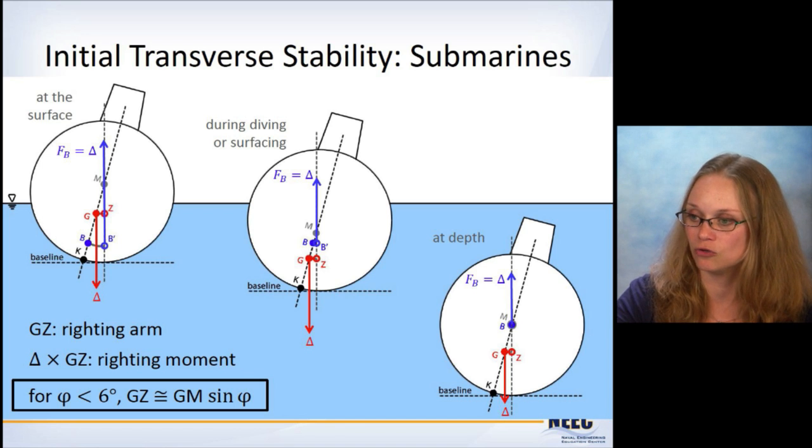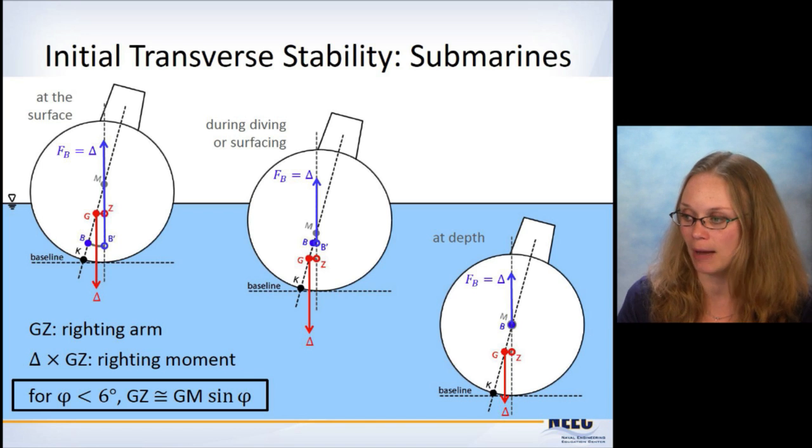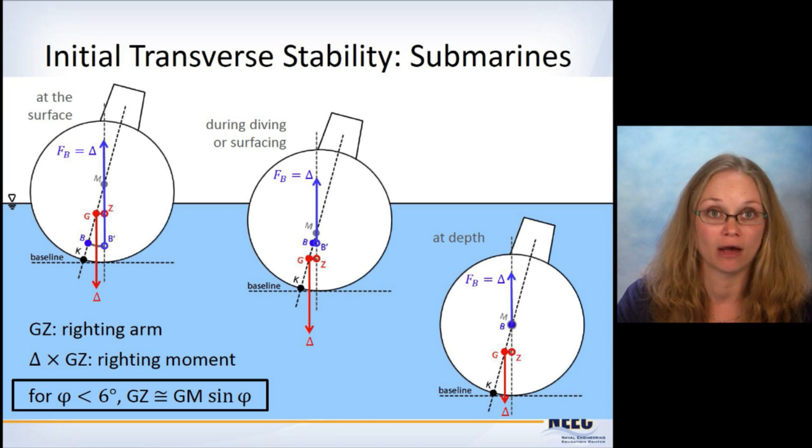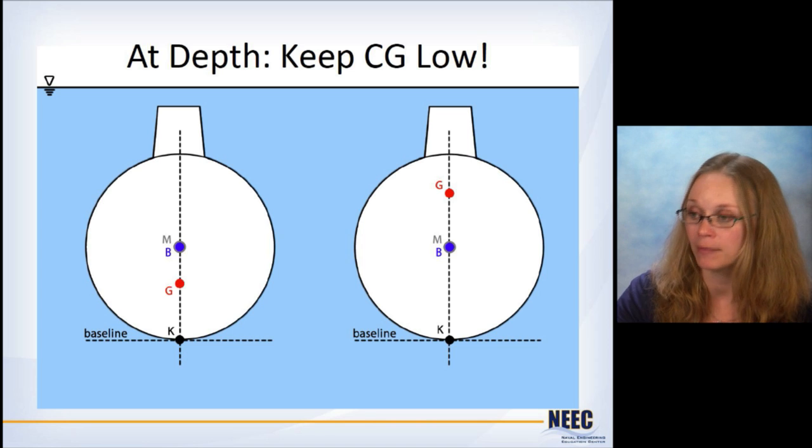But you can see that because of the different cases, you've got different GMs that are around, different GZs. And so you can't design the submarine just to be operating at the depth or just during diving or surfacing or just at the surface. It has to be designed such that in each of these cases, you're going to have a safe GM value.